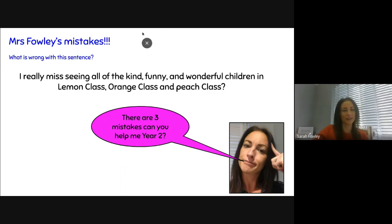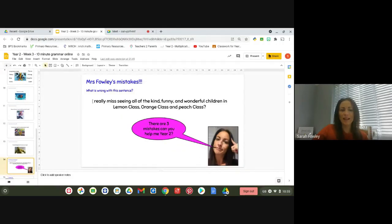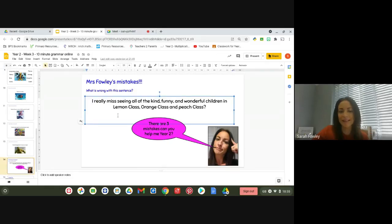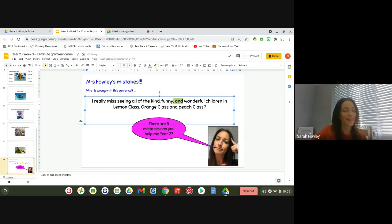I. Now, I remembered to use a capital letter this time, so that's not a mistake. Yes, I learned from that mistake last week when I forgot to start my sentence with a capital letter. I really miss seeing all of the kind, funny, oh, I see what I've done here. I've put my and and comma next to each other again. And why shouldn't I do that, year two? That's right, they are not friends. Okay, so I must remember next week not to make that mistake again.